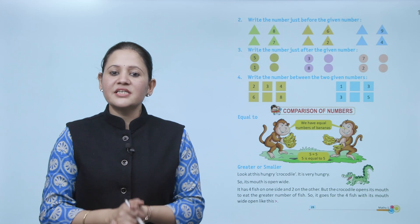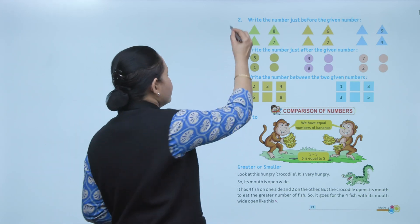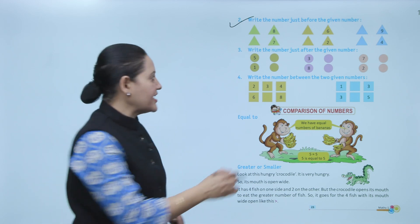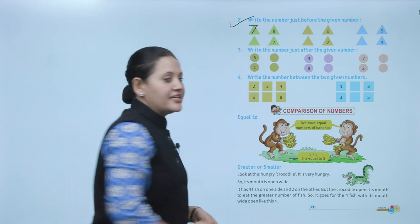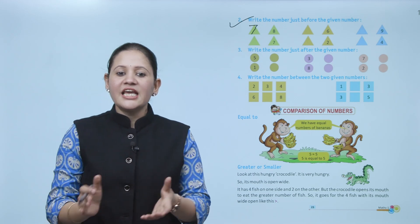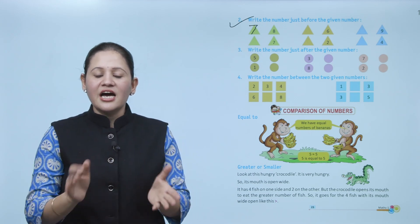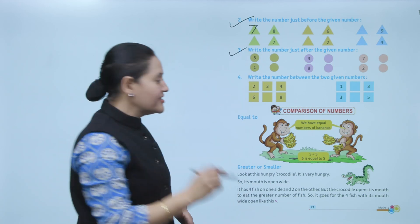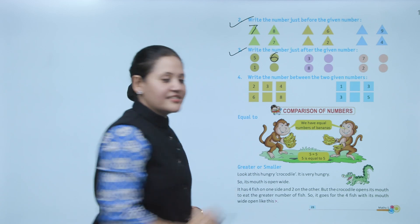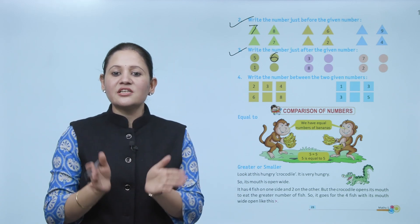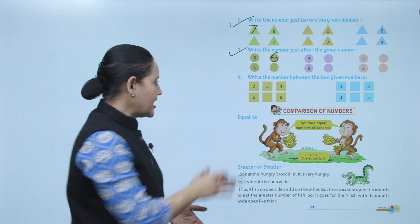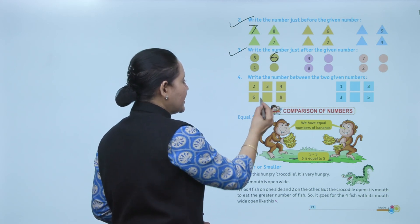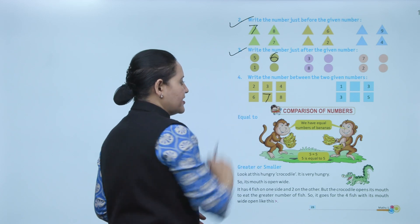Next, write the number just before the given number. The given number is eight — what comes before eight? That is seven, so write seven. Next, write the number just after the given number. Our number is five — what comes after five? That is six, so write six. Next, write the number between two given numbers — what comes between two and four? Three. What comes between six and eight? Seven, so write seven.